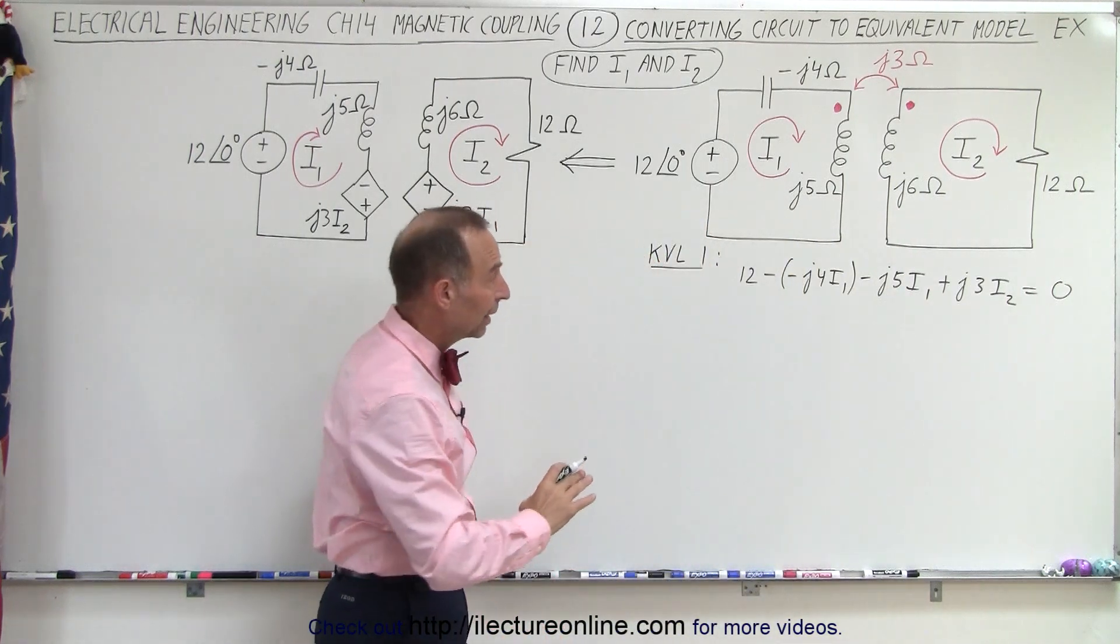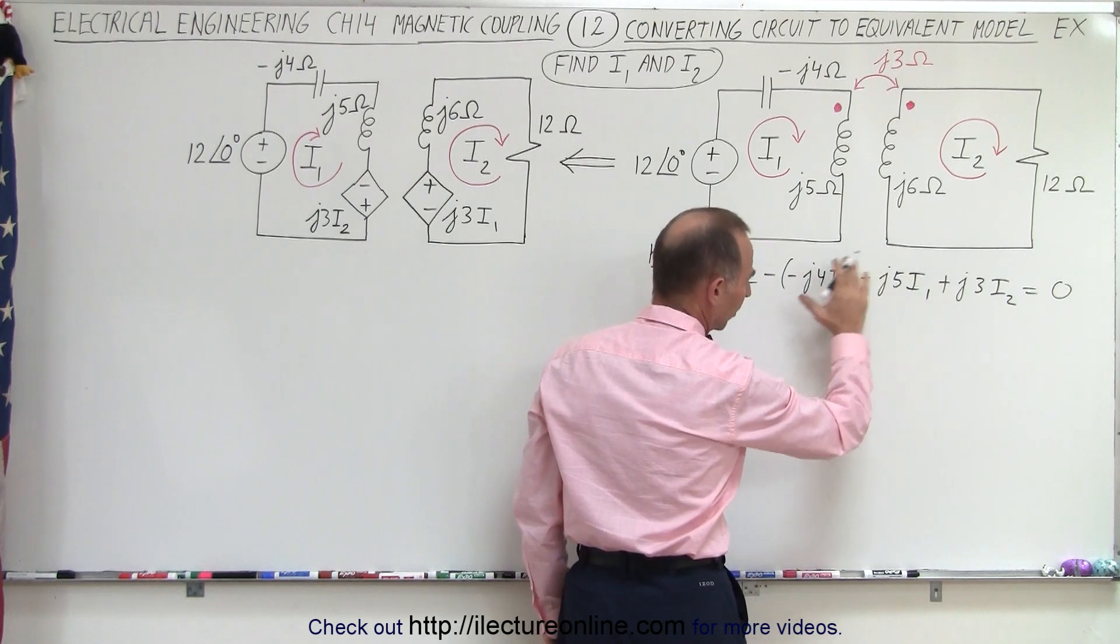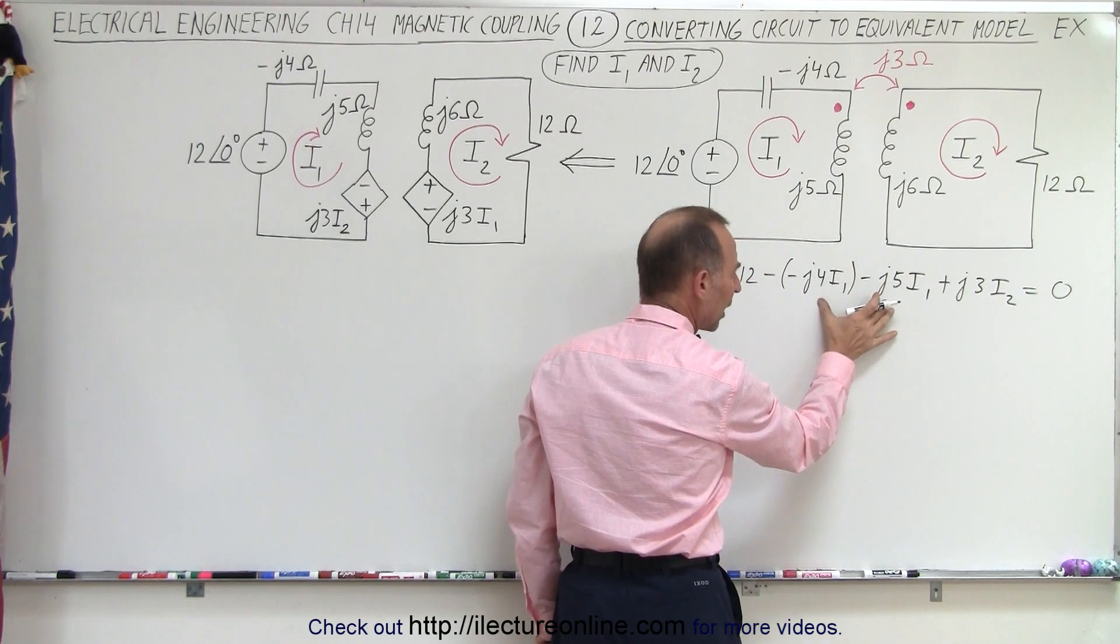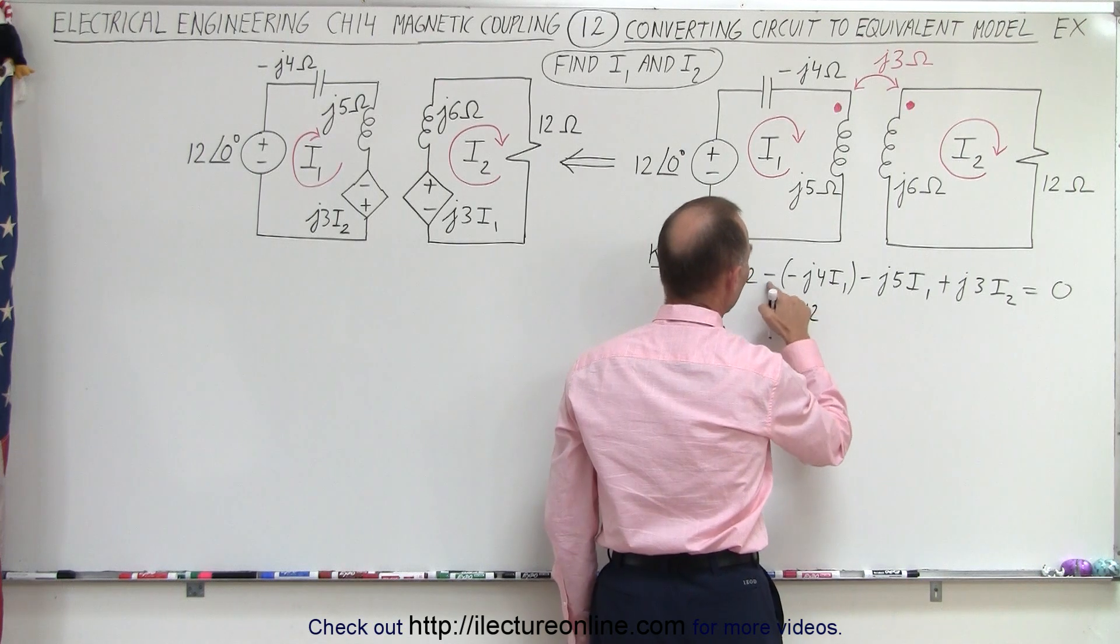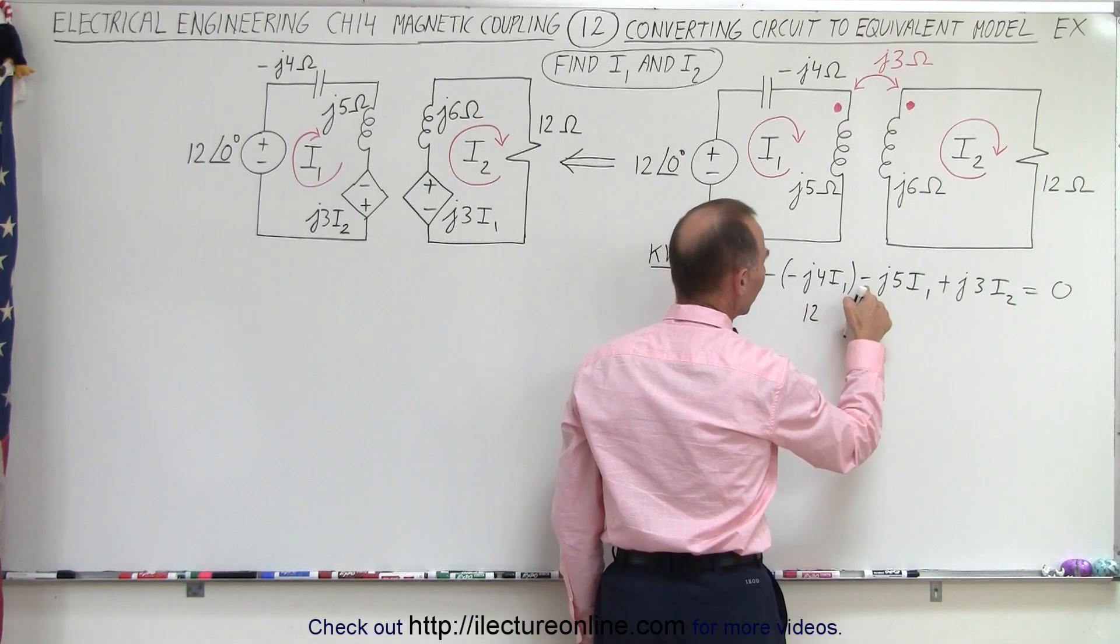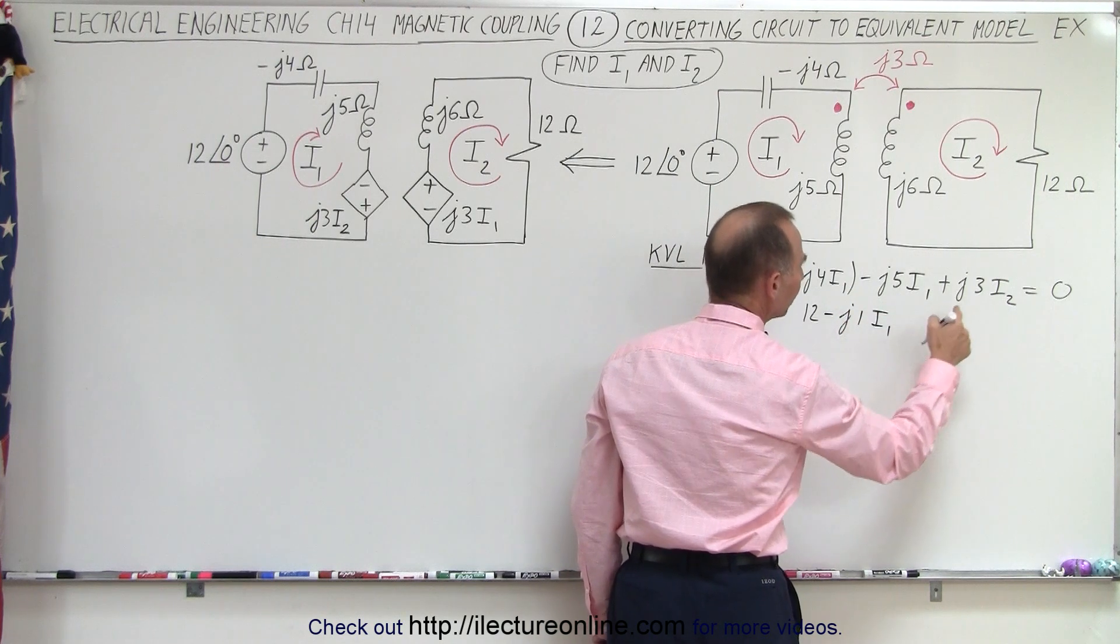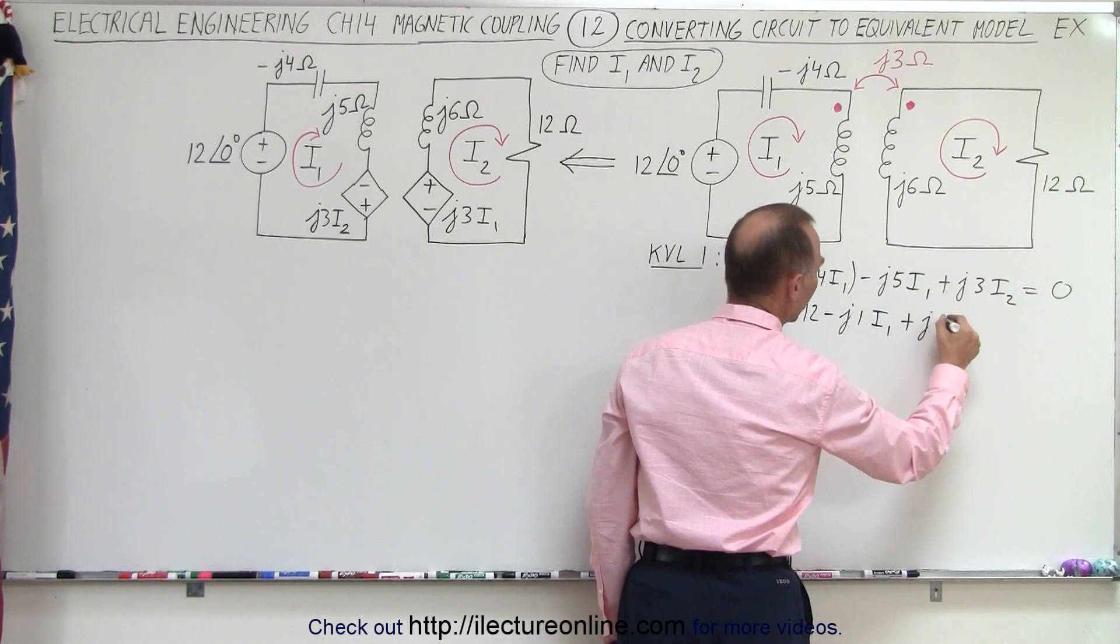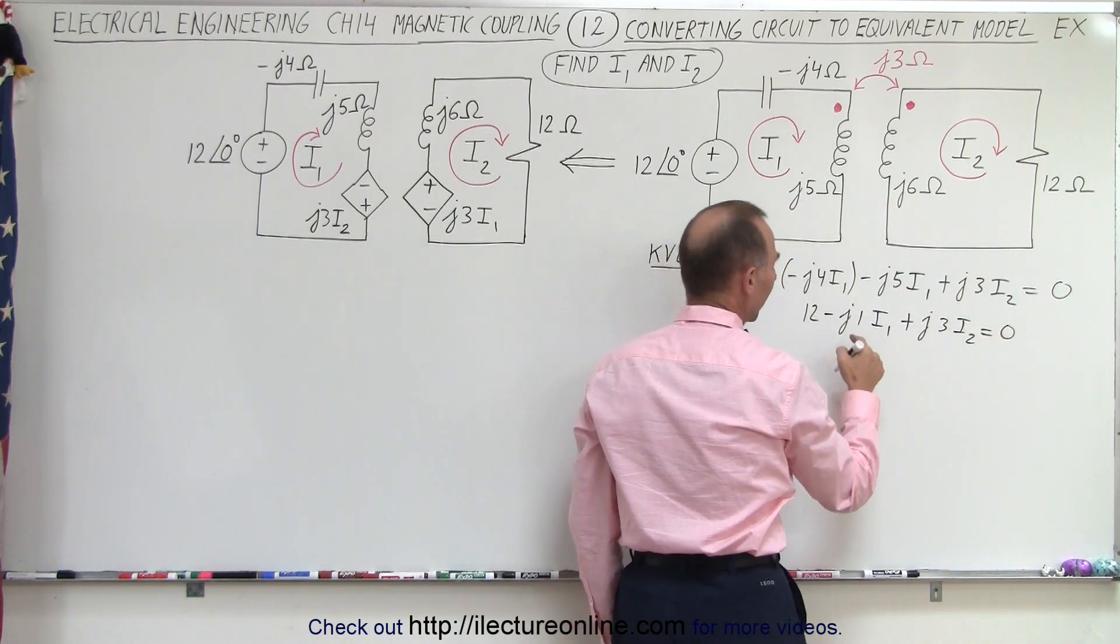Now all we have to do here is solve this for one of the currents in terms of the other. What we're going to do is combine these two and solve for I1 in terms of I2. So this gives us 12 minus times the minus is plus, but this is minus, so it's minus J1 times I1 plus J3I2 equals 0.